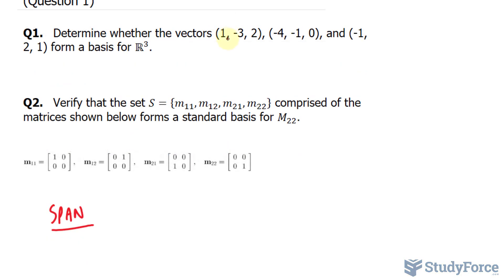Let's start by multiplying each of these vectors by a scalar. I'll represent each scalar by the letter k. So I have k sub 1 times (1, -3, 2) plus k sub 2 times this vector (-4, -1, 0) plus k sub 3 times our last vector (-1, 2, 1). And we'll let this equal to another vector, which has the components a, b, and c.